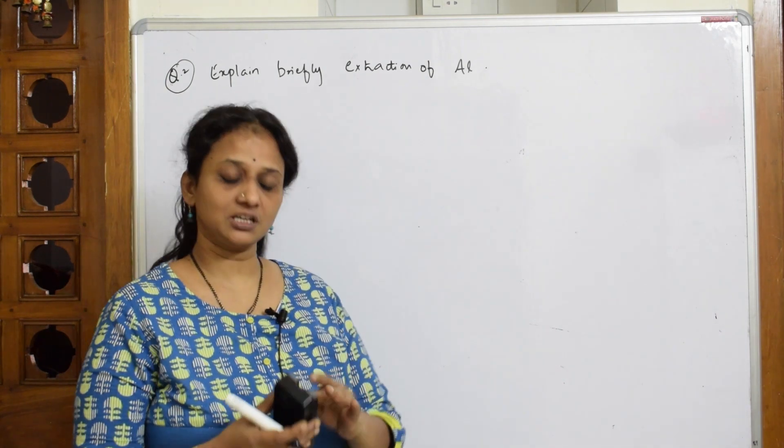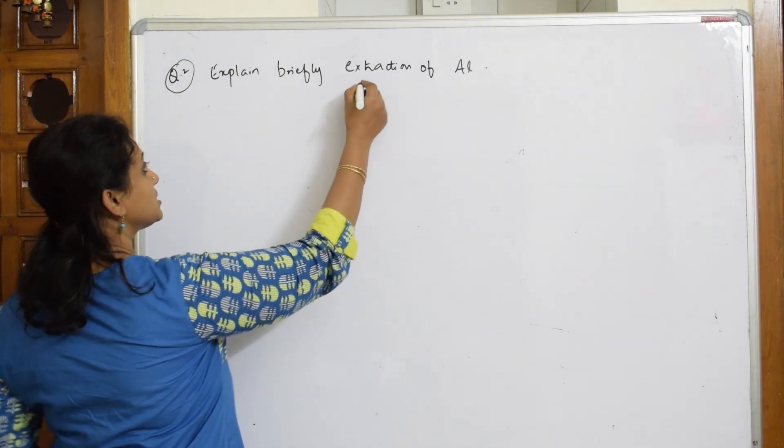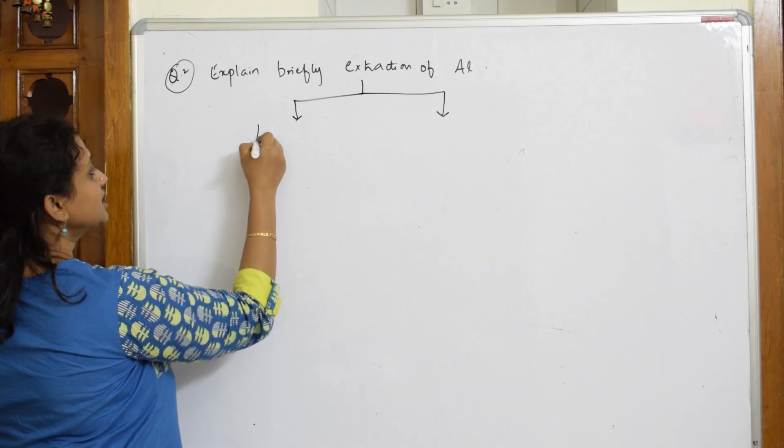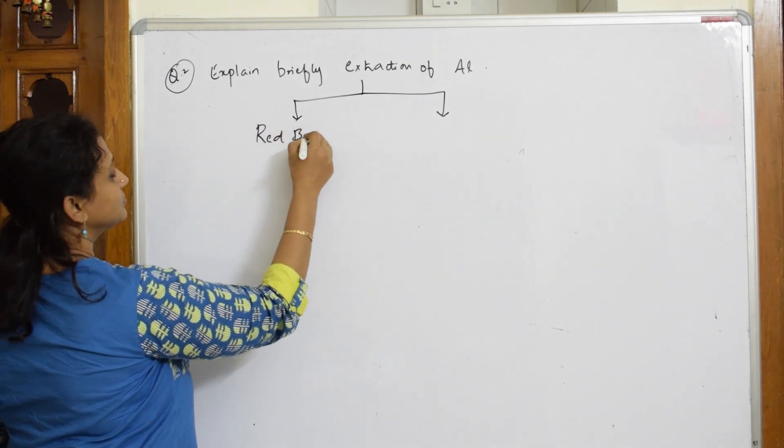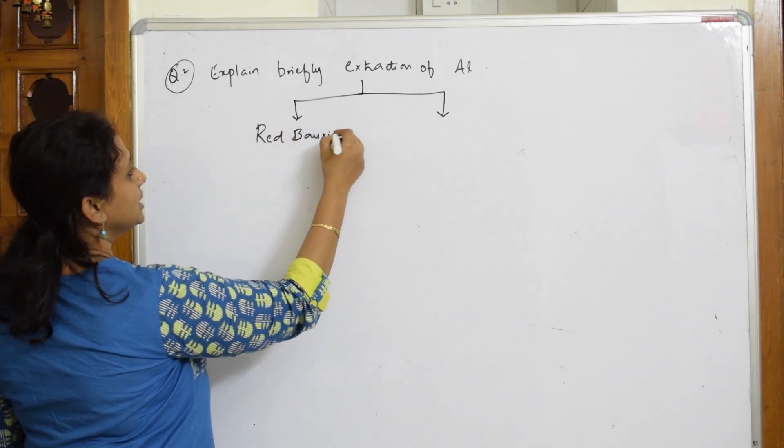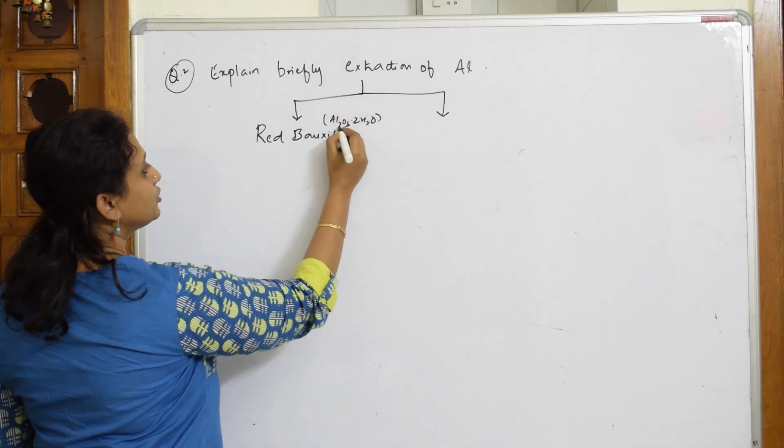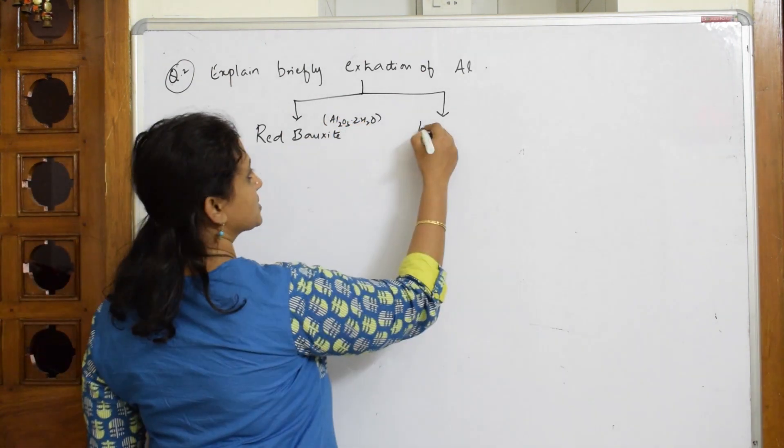So now what happens in extraction? Basically extraction processes are of two types. When I speak about red bauxite, bauxite formula is Al2O3.2H2O. Now there are two types, red bauxite and white bauxite.